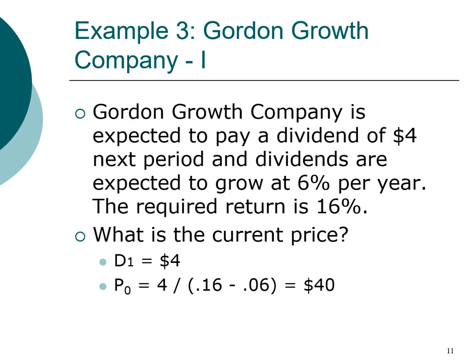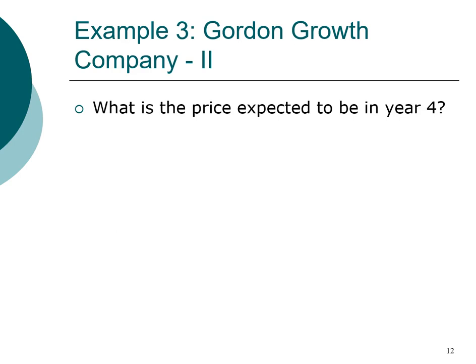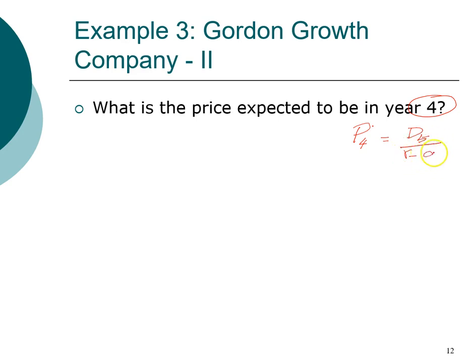Now for the next part of the same problem — the same company with D1=$4, g=6%, r=16% — what is the price of the stock in year four? The important thing to understand is that if we're looking for the price in year four, we are finding the present value as of year four. If you buy the stock in year four, the first dividend you'll receive is in year five — there's always a one-year difference. So we need to find what dividend is in year five.